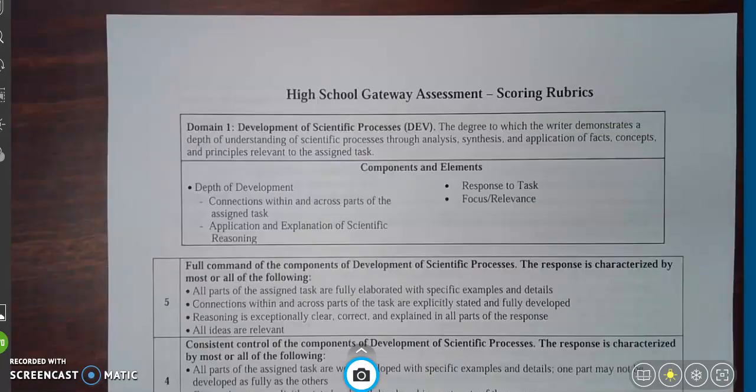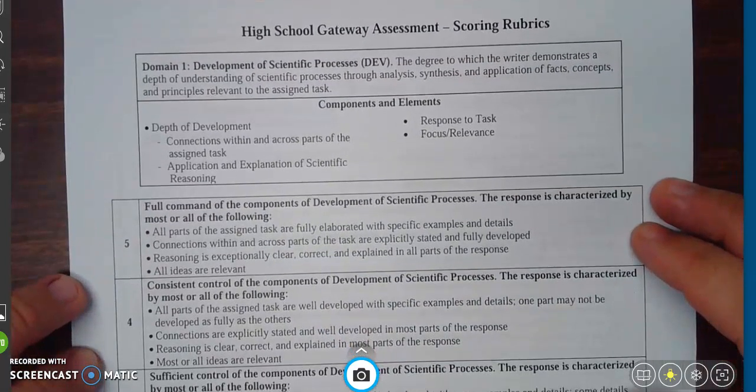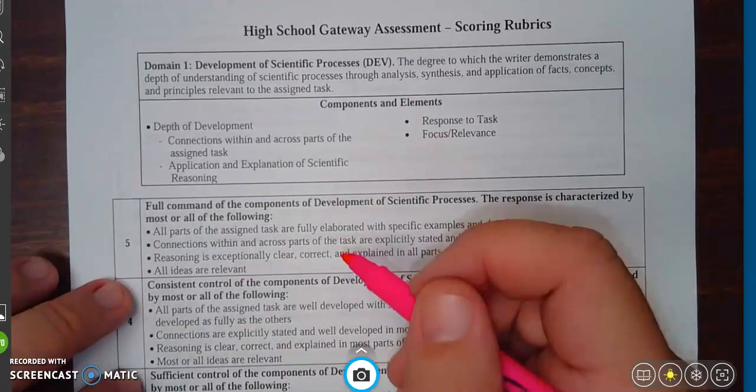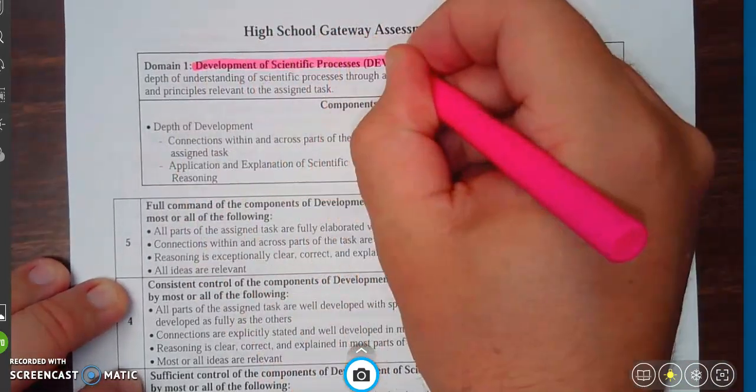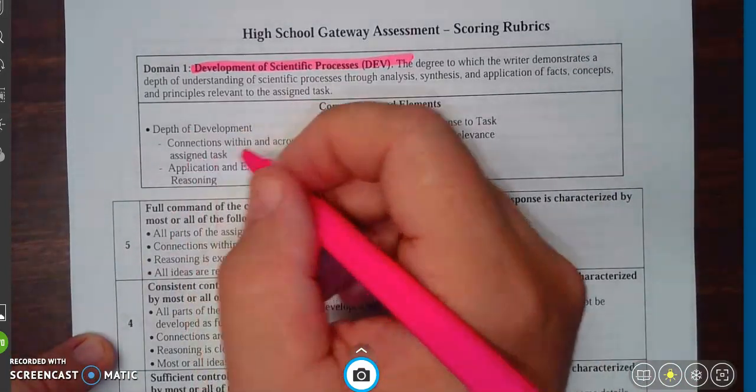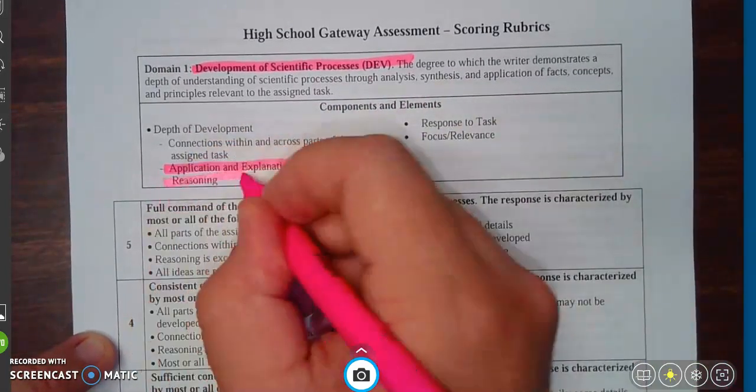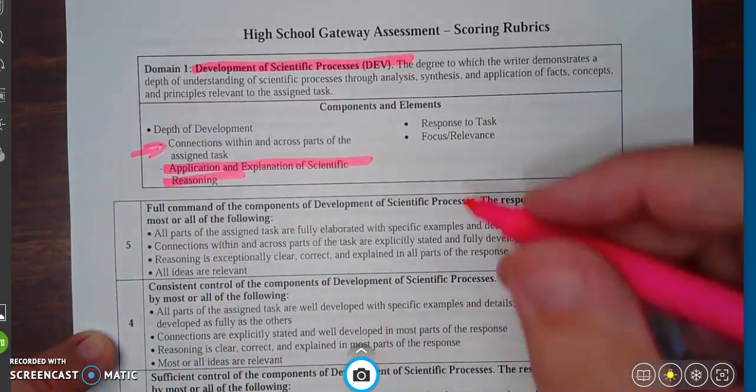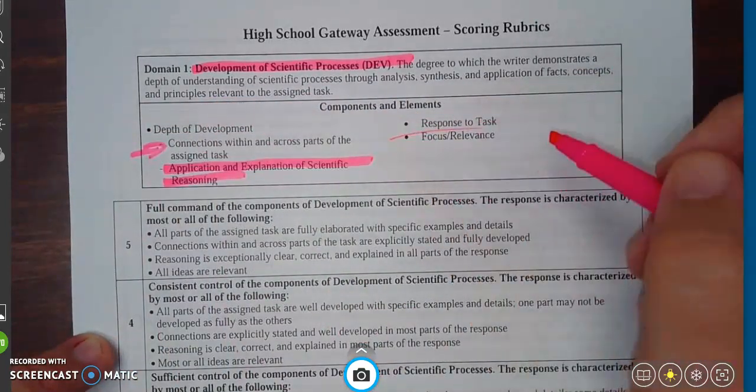So I wanted to go through this science rubric as well, just to make sure that you see it and have access to it. So, domain one: development of the science process. You can read the description there, but the components and elements, the application explanation of scientific reasoning, making sure here you're obviously addressing the prompt, the focus and relevance as well.